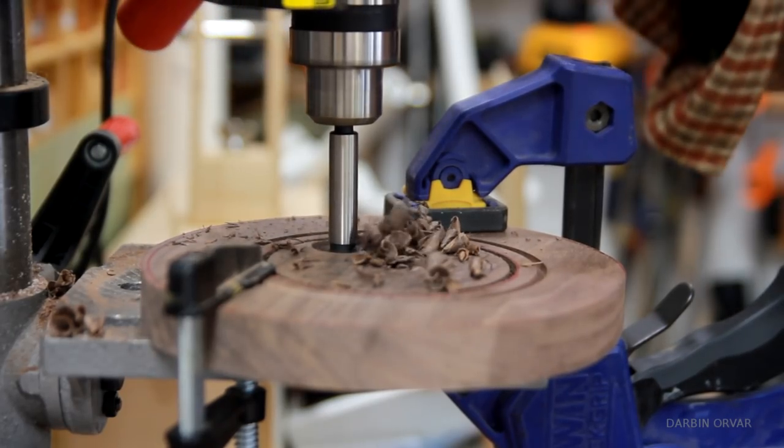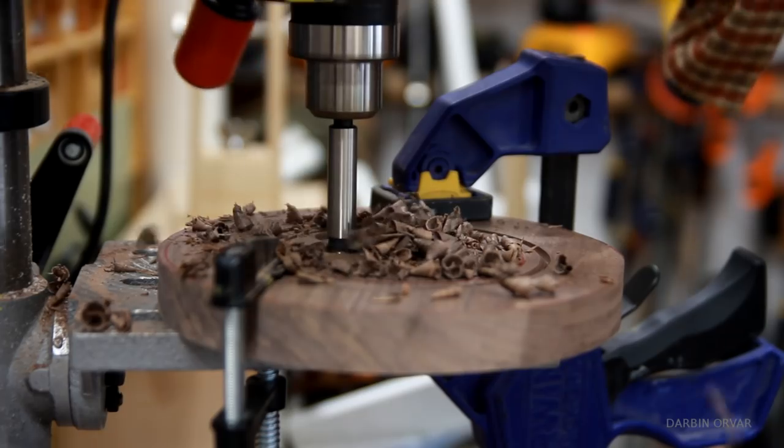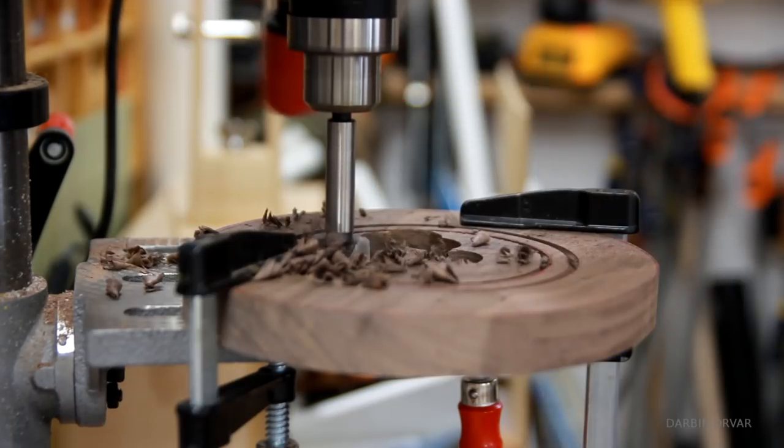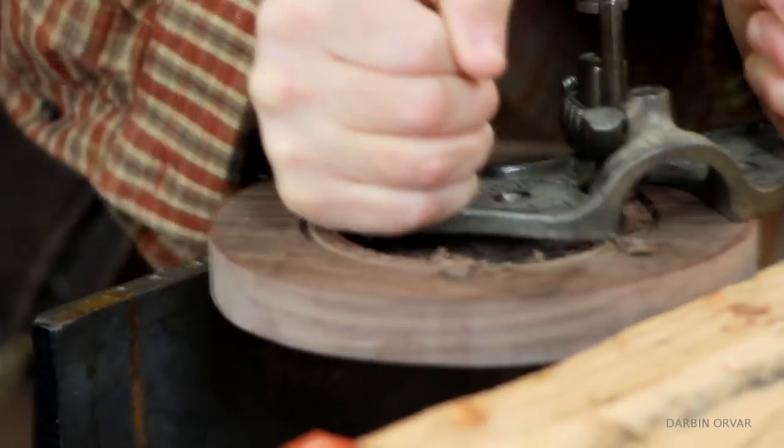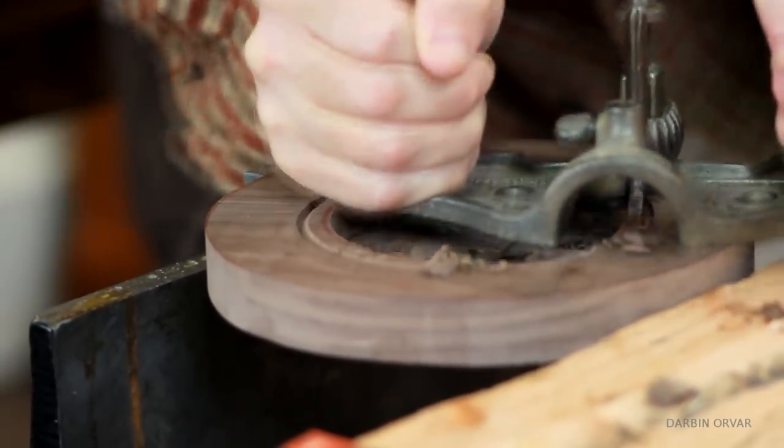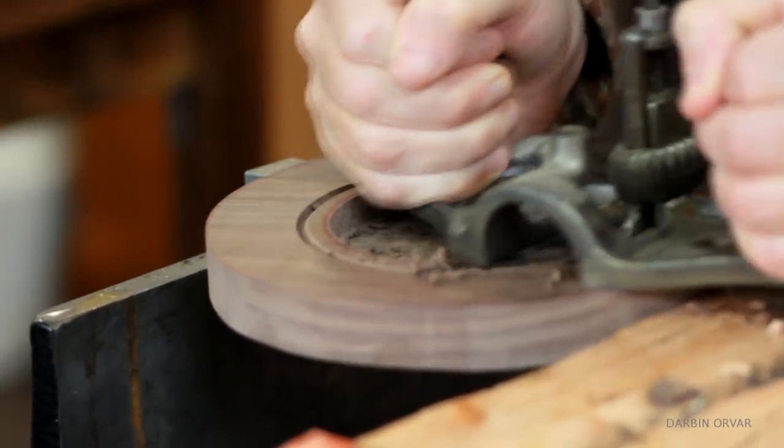Then the idea was to carve out the inner section, so just eating that away with the forstner bit. And then cleaning that up using this hand router, which is such a cool tool.